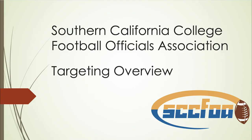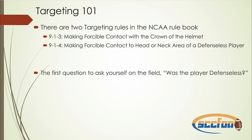Our next couple of clips are going to focus on targeting. Before we get into the clips, wanted to go over a targeting overview. This is not necessarily the end-all be-all checklist — just something I put together a couple of years back. We shared this at Jeff Applebaum's meeting this last week and it was pretty well received. There are two targeting rules in our NCAA rulebook: 9-1-3 and 9-1-4.